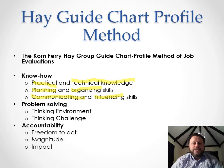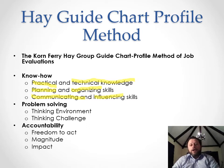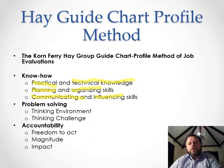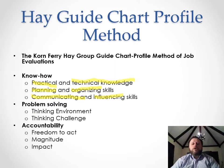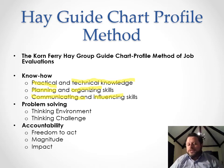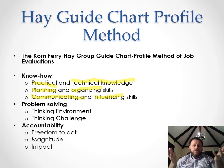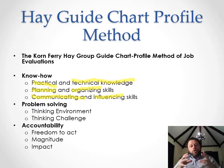Each factor — planning and organizing skills, communicating skills, influencing skills — gets a number, say out of 100. For practical knowledge, both salesperson and marketing manager might score 50 out of 100. But for technical knowledge, a marketing manager might score 70 while a salesperson scores 30. Adding these up, the marketing manager's score is already higher, meaning they get paid more.